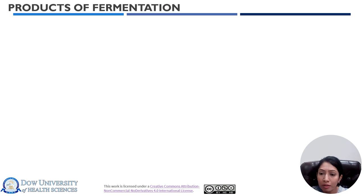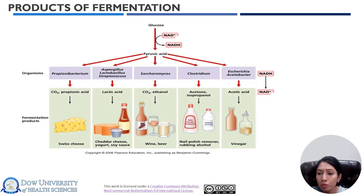Fermentation is a metabolic process that some microorganisms use to break down glucose and other sugar molecules when oxygen is not available. It is a way that some bacteria use to produce ATP to meet their energy requirements. Although ATP levels through fermentation are significantly lower than aerobic respiration, fermentation includes the metabolic pathway glycolysis, where a single molecule of glucose is broken down into two molecules of pyruvate, as well as additional fermentation reactions that produce a variety of end products such as acids, alcohol, and gases — including propionic acid, acetic acid, ethanol, vinegar, and wine.